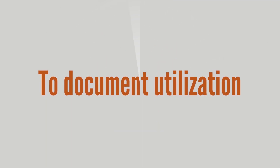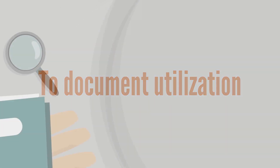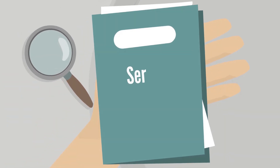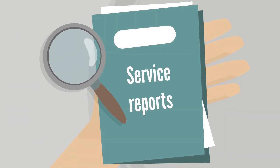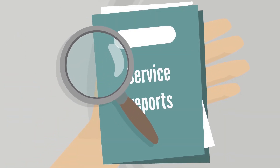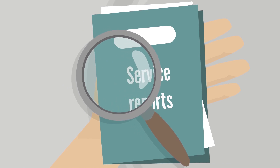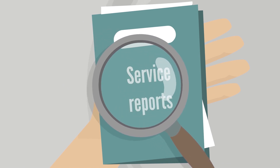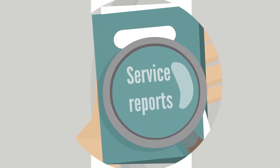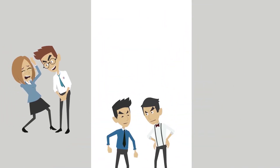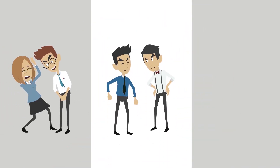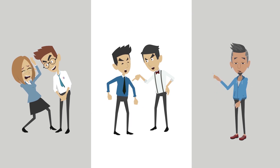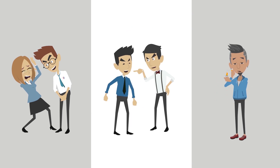To document utilization, Uliance provides service reports that allow an organization to identify issues and trends such as sexual harassment, workplace violence, and opioid addiction.